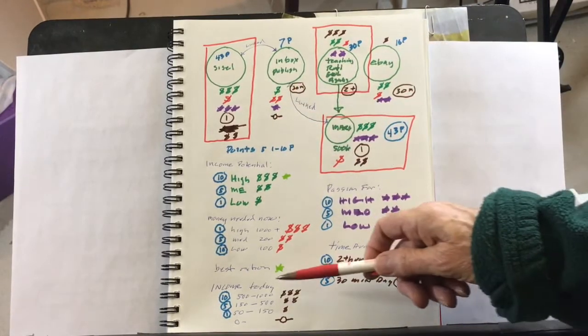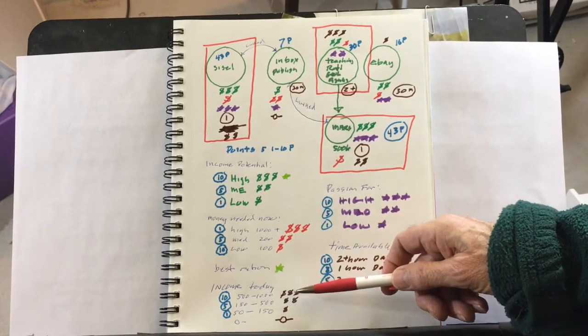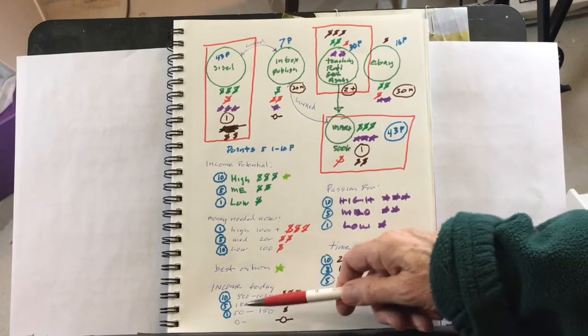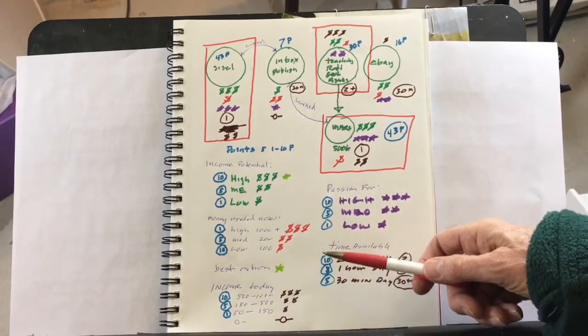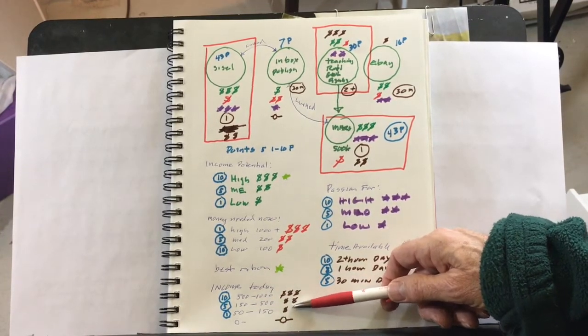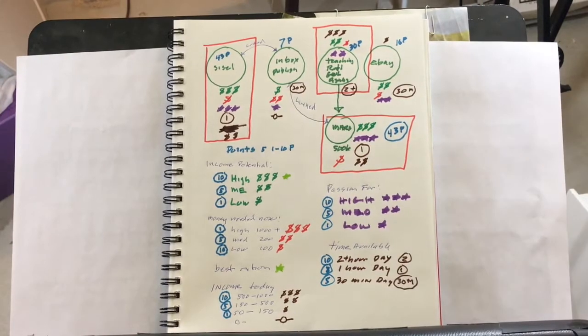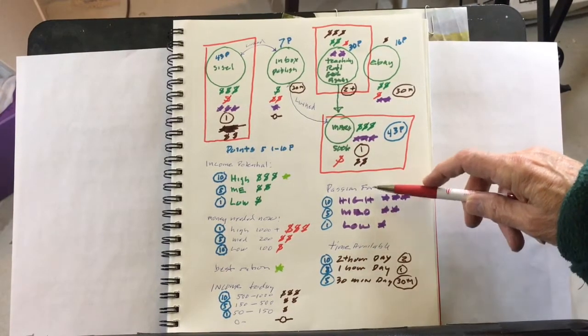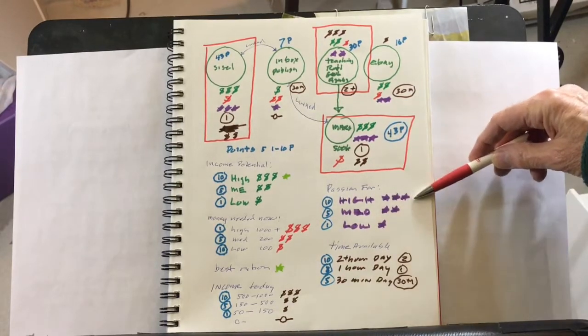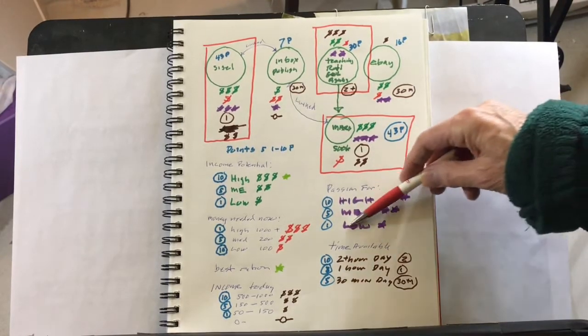And then, down here is income today. Is this project creating five hundred to a thousand dollars of income today? It gets three of these brown dollar signs. If it's generating 150 to 500, it gets two. If it's generating 50 to 150, it gets one. If it's generating zero, it gets a zero. And in this, there's the passion for. A high passion is three stars. Medium is two stars. Low is one star.